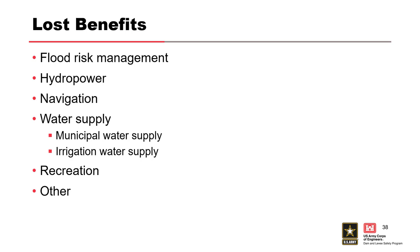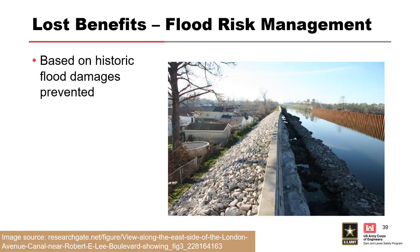One category to think about is projects supporting critical infrastructure like nuclear facilities — that wouldn't necessarily be captured in standard accounts. Be aware of what critical infrastructure your projects are supporting, whether intended or not. For flood risk management, the Corps considers historical flood damages prevented — what would flooding look like without the project versus with it? This calculation is done annually and informs how many damages are no longer prevented if a project fails.